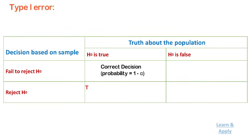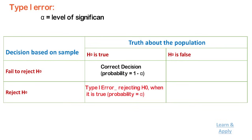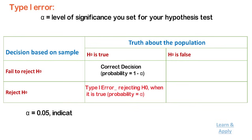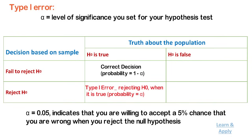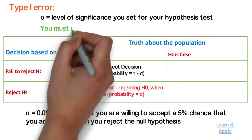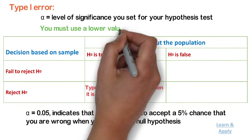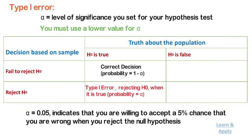Type 1 error: when the null hypothesis is true and you reject it, you make a type 1 error. The probability of making a type 1 error is alpha, which is the level of significance you set for the hypothesis test. An alpha of 0.05 indicates that you are willing to accept a 5% chance that you are wrong when you reject the null hypothesis. To lower this risk, you must use a lower value for alpha. However, using a lower value for alpha means that you will be less likely to detect a true difference if one really exists.